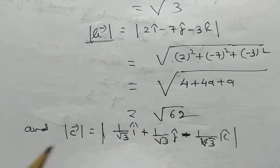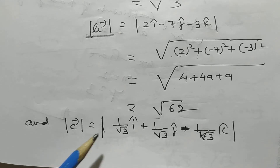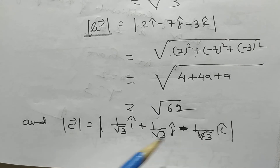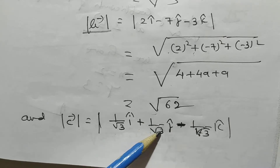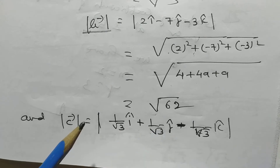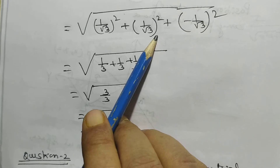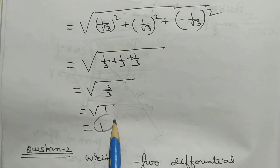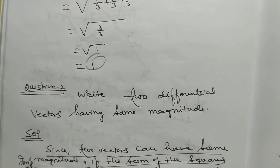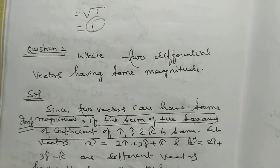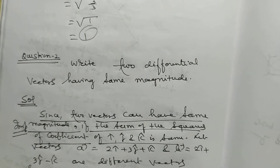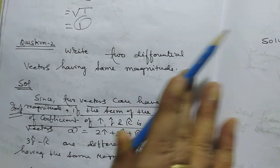And vector C equals (1/√3)i + (1/√3)j − (1/√3)k. The magnitude of vector C is √((1/√3)² + (1/√3)² + (−1/√3)²). After simplifying, you will get magnitude equal to 1. In this way, we can calculate the magnitude of vectors A, B, and C in these three different situations.